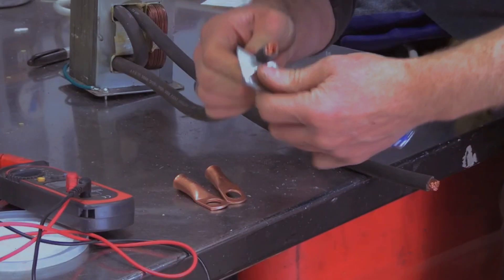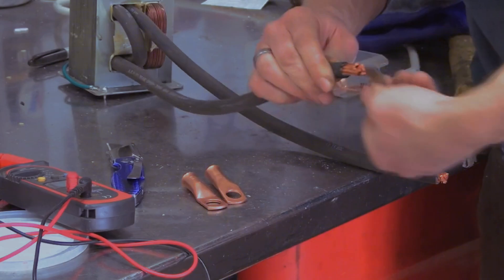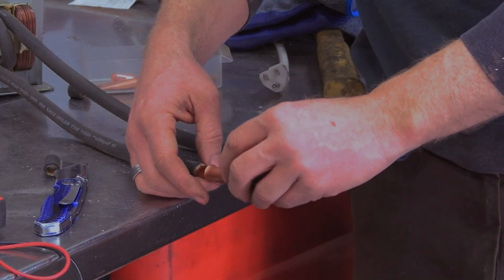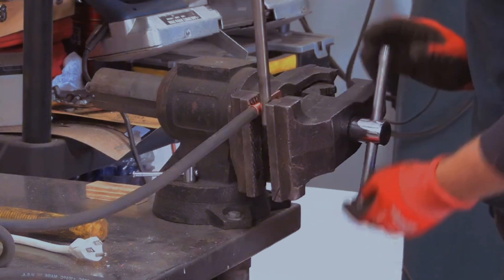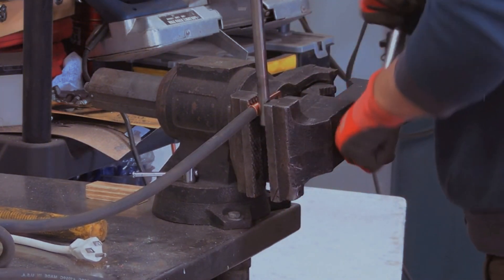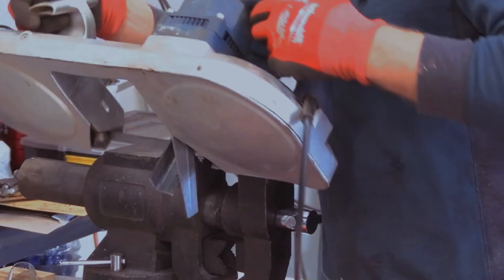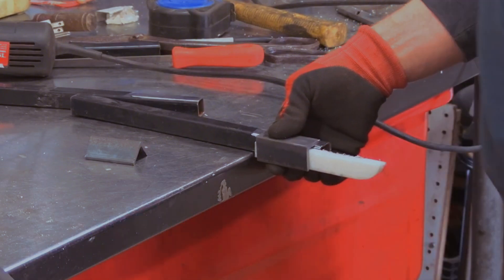A spot welding machine can be made from a microwave oven transformer, which is a device that converts low-voltage AC power to high-voltage AC power. The microwave oven transformer can be modified by removing the secondary coil and replacing it with a thicker wire that can handle more current.